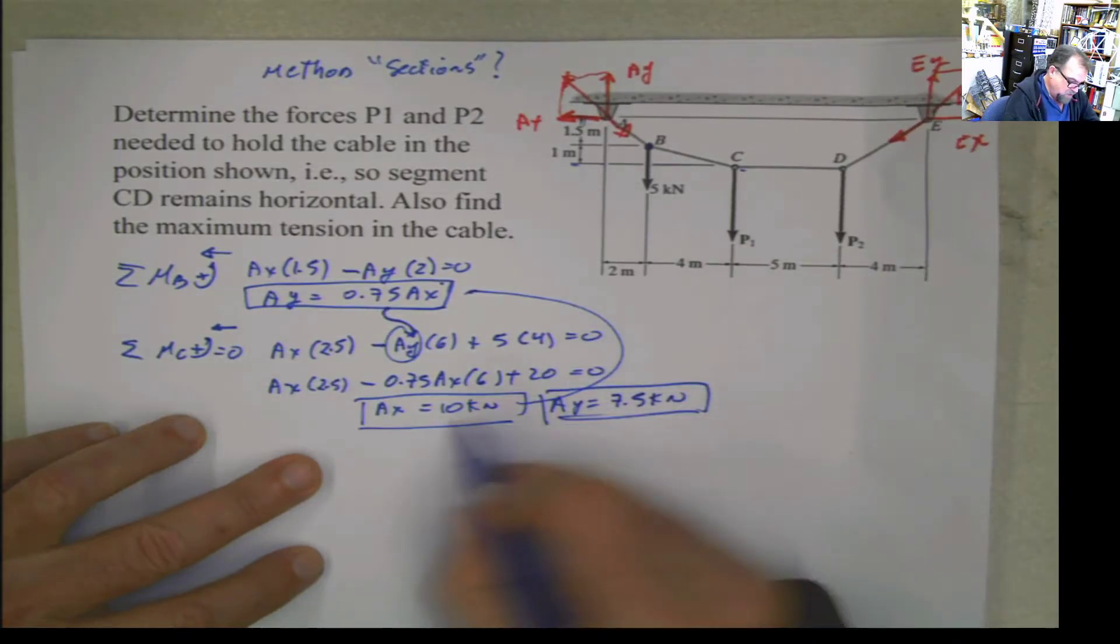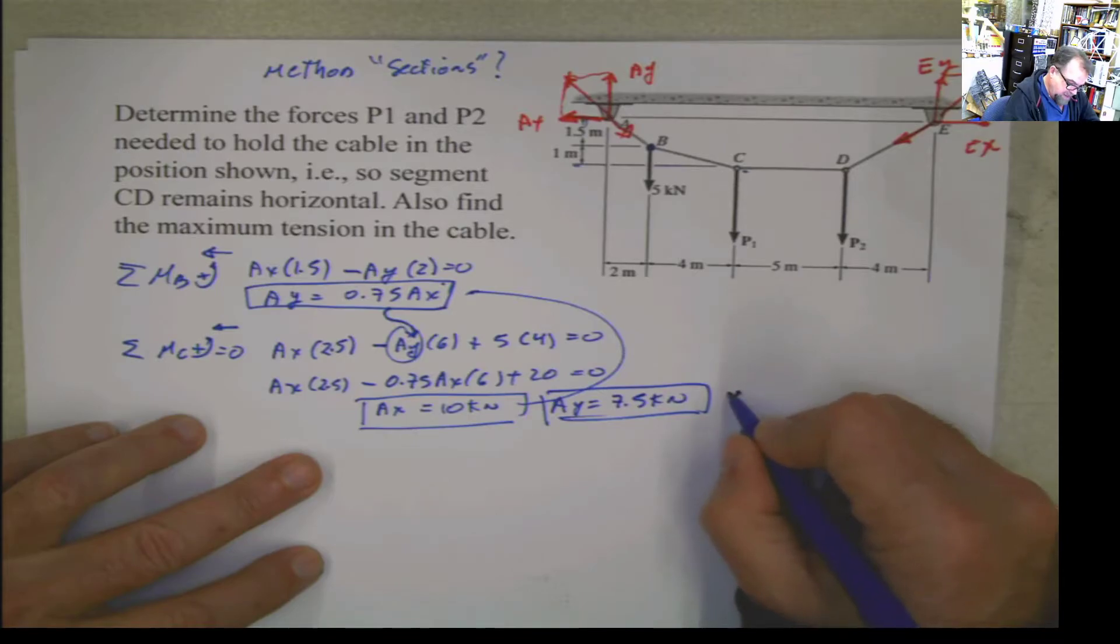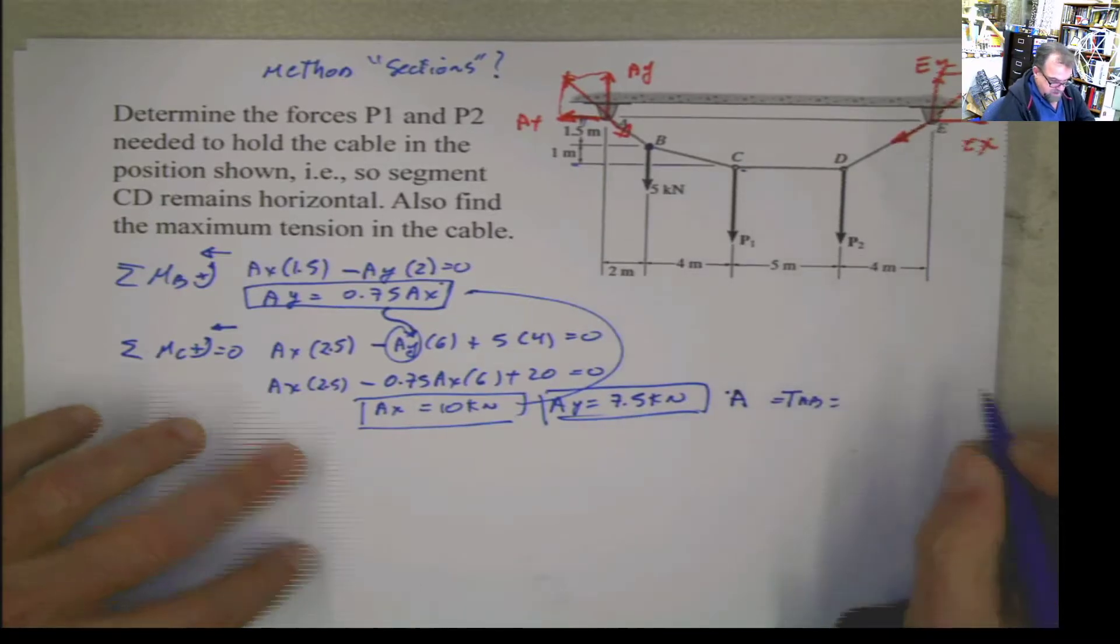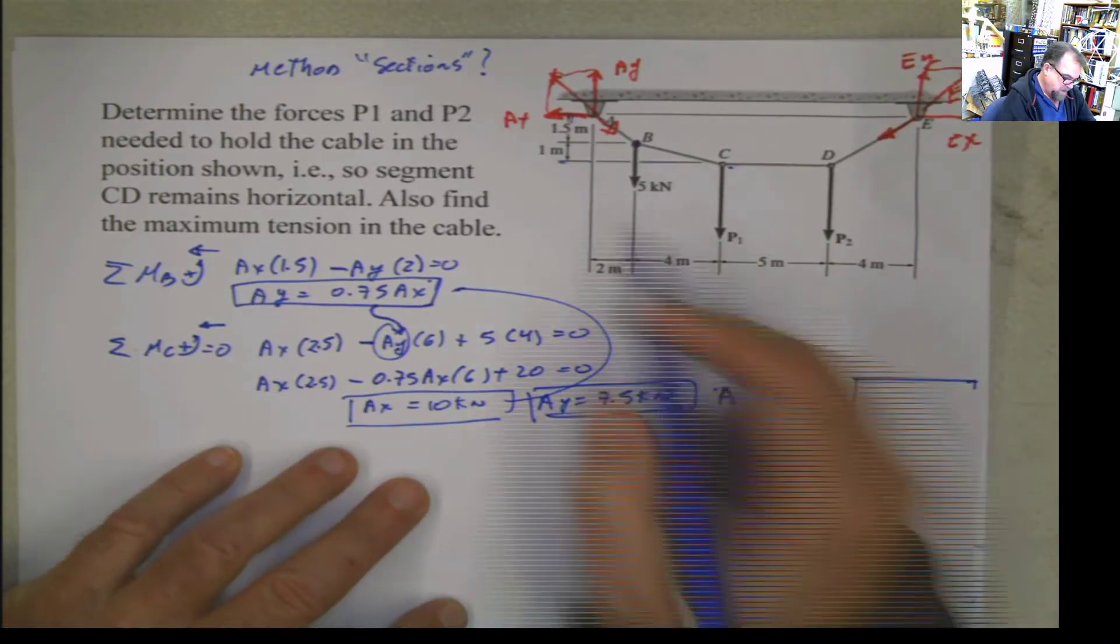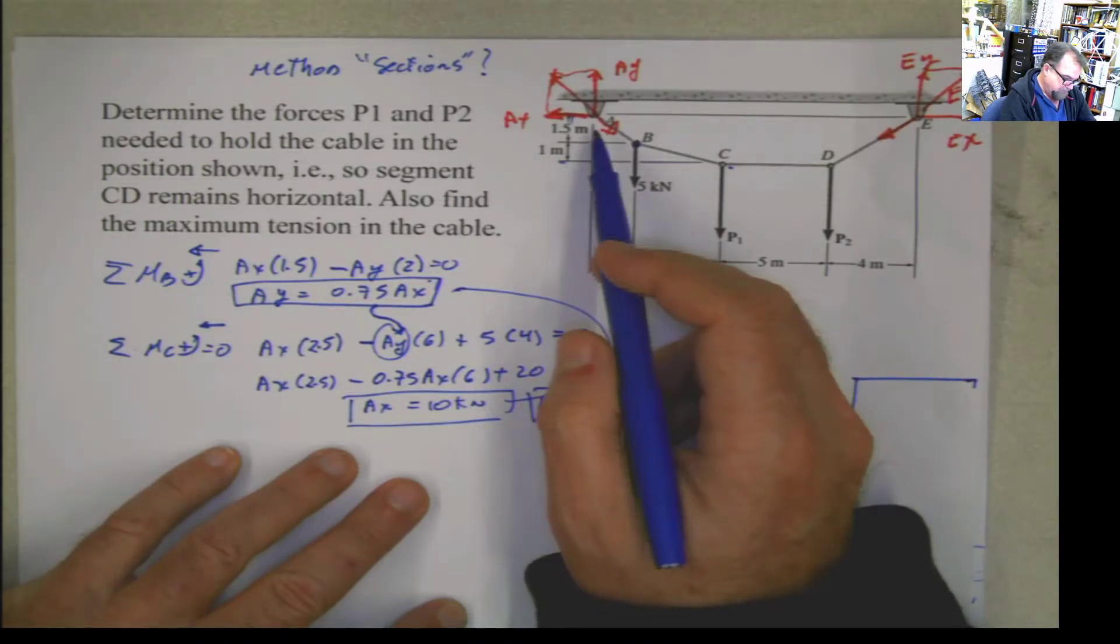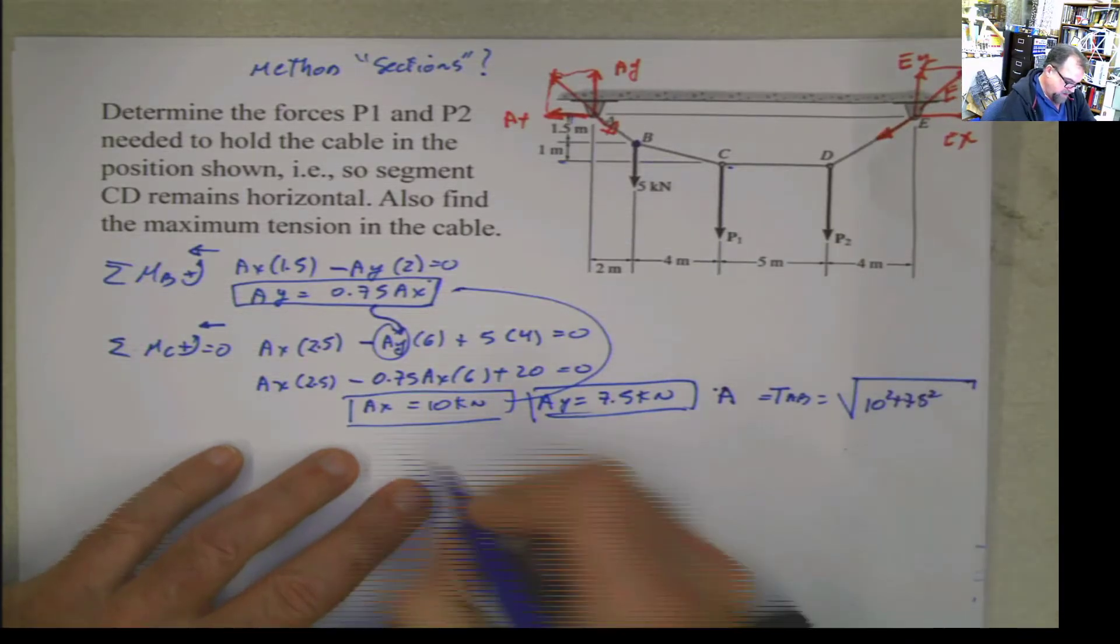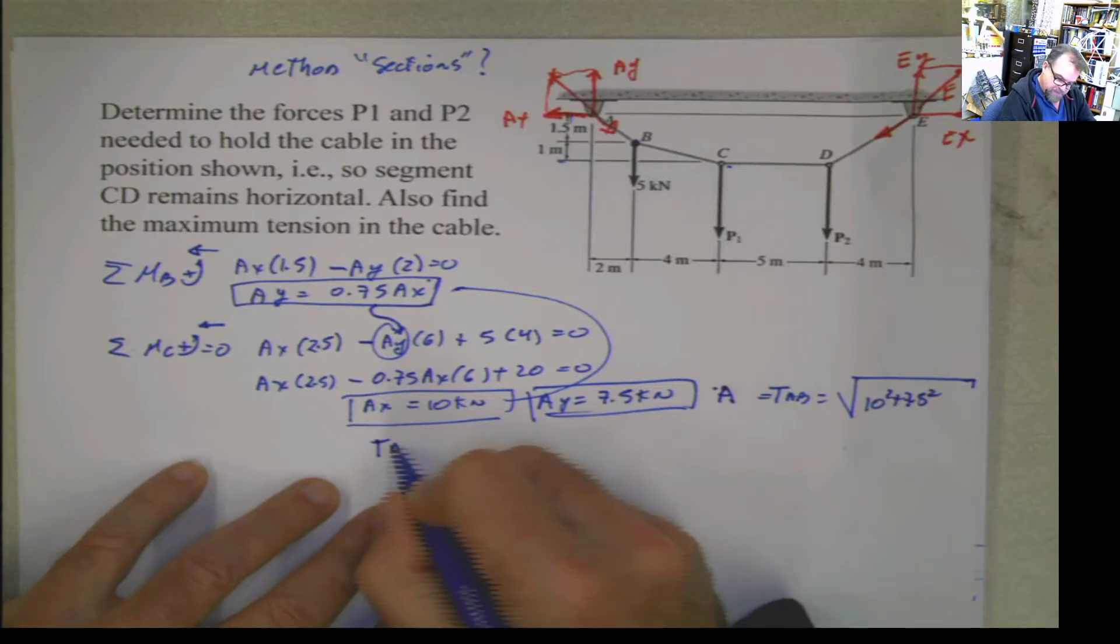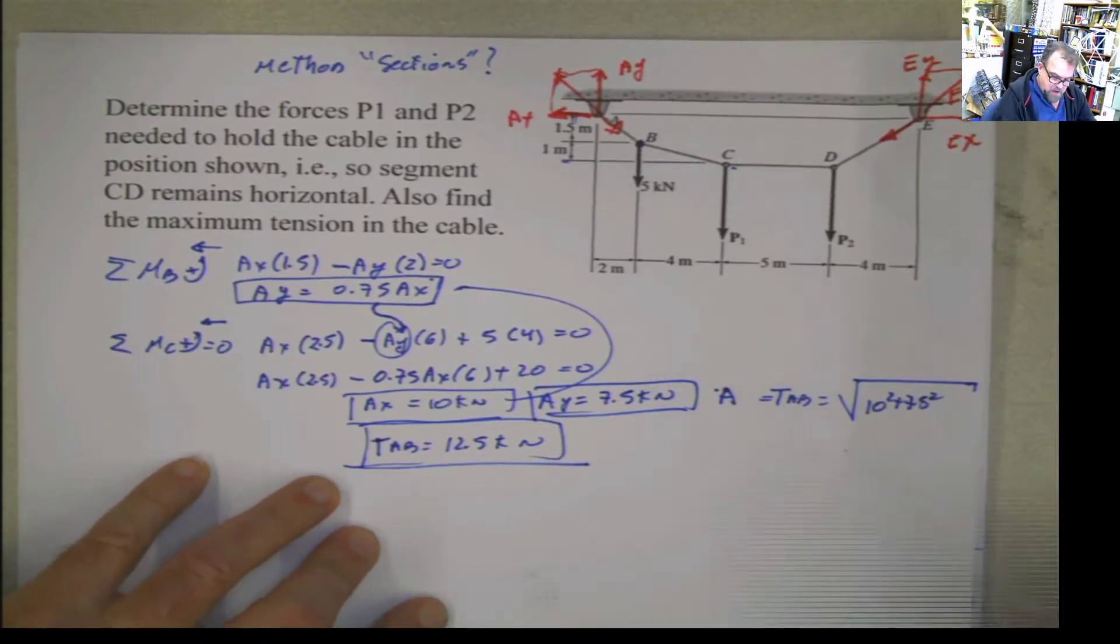If I combine these two, as I said before, I could say that the reaction at A, which is going to be the same as TAB, is going to be the square root of 10 squared plus 7.5 squared. And that's going to be TAB, and it's going to be 12.5 kilonewtons. Good.